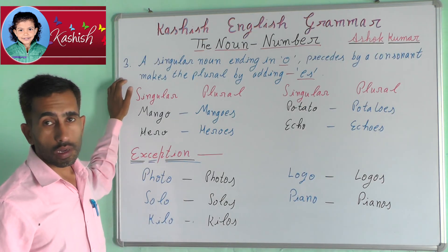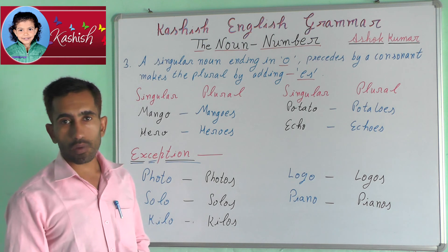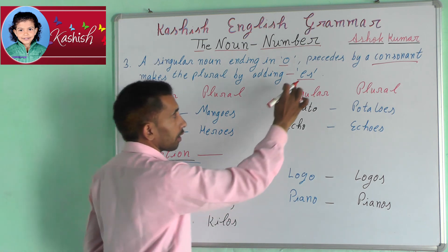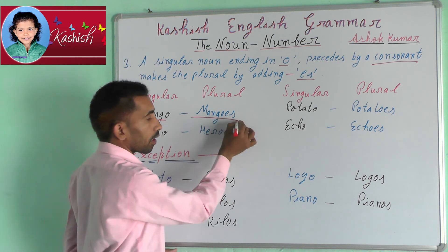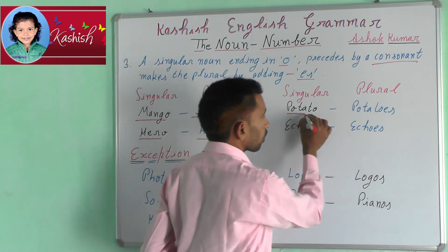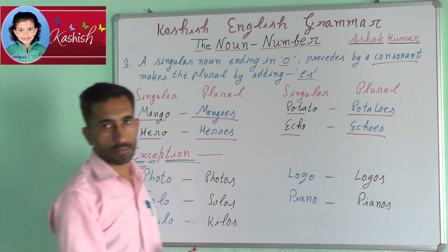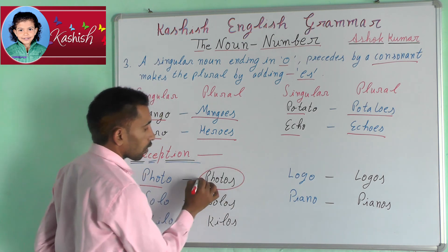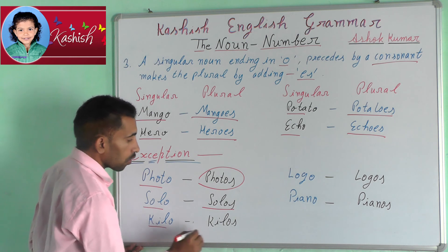Third rule: a singular noun ending in O preceded by a consonant makes the plural by adding ES. For example: mango → mangoes, hero → heroes, echo → echoes. Exception: photo → photos, solo → solos, kilo → kilos.